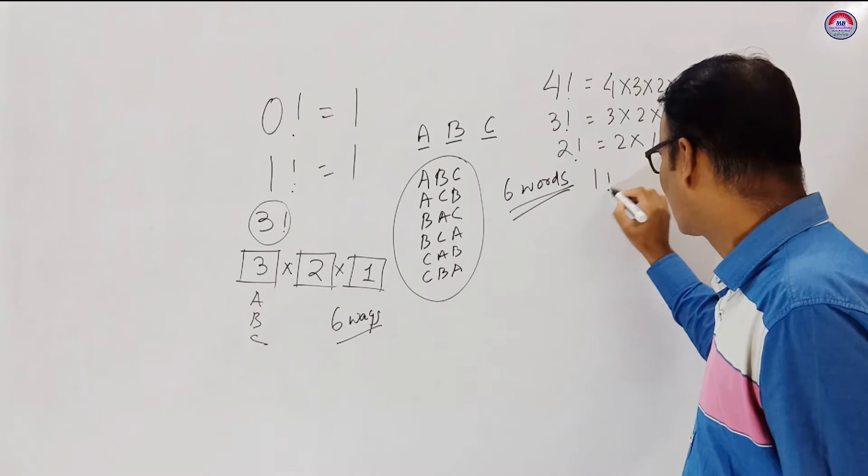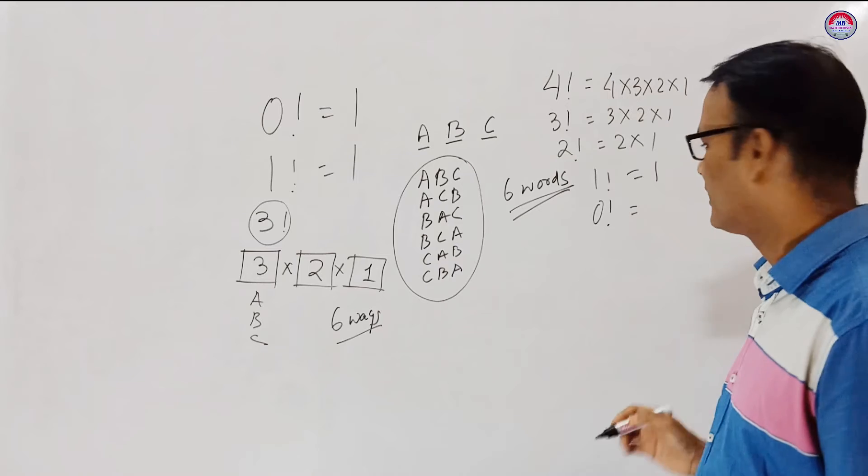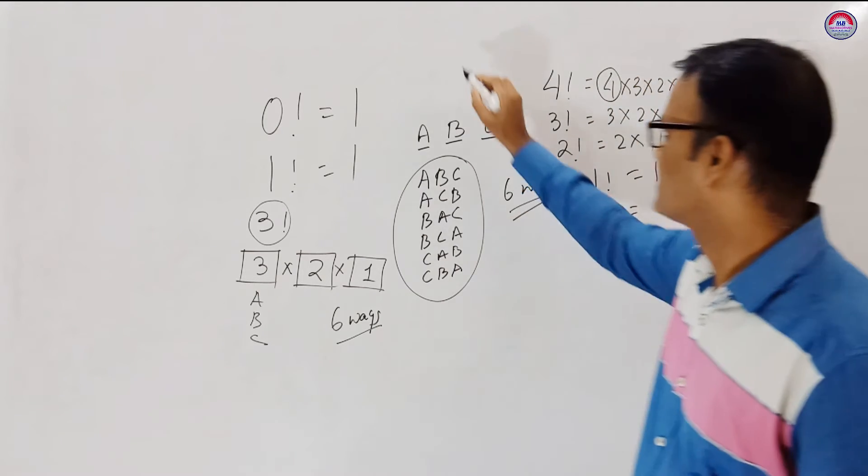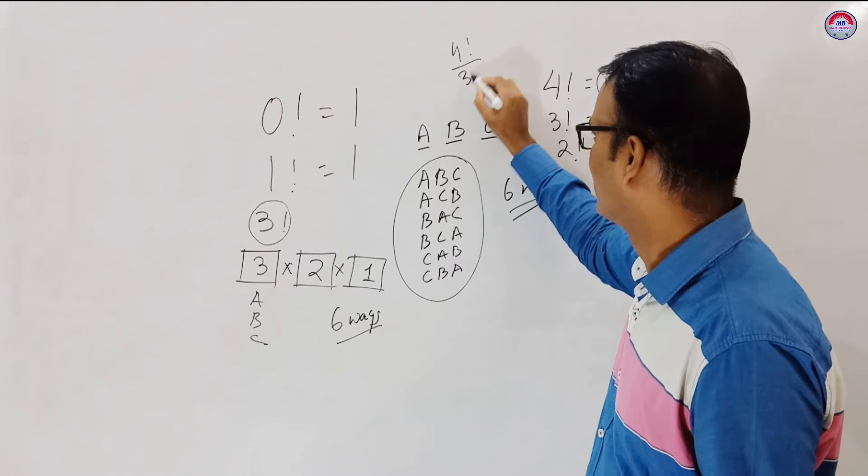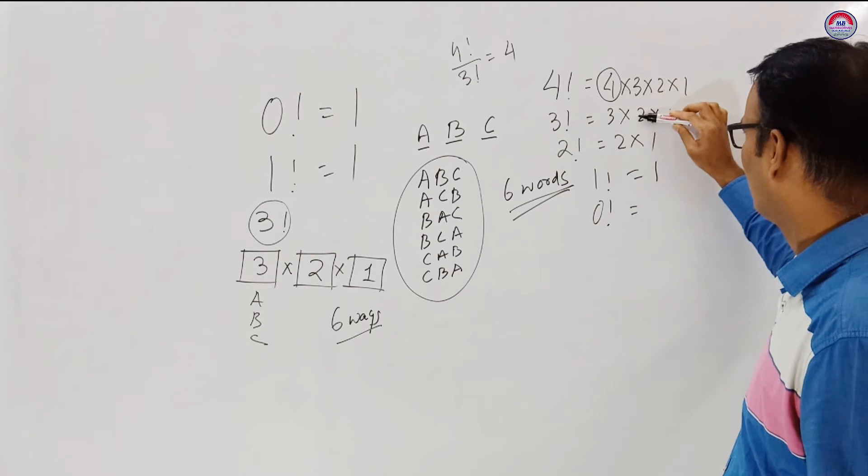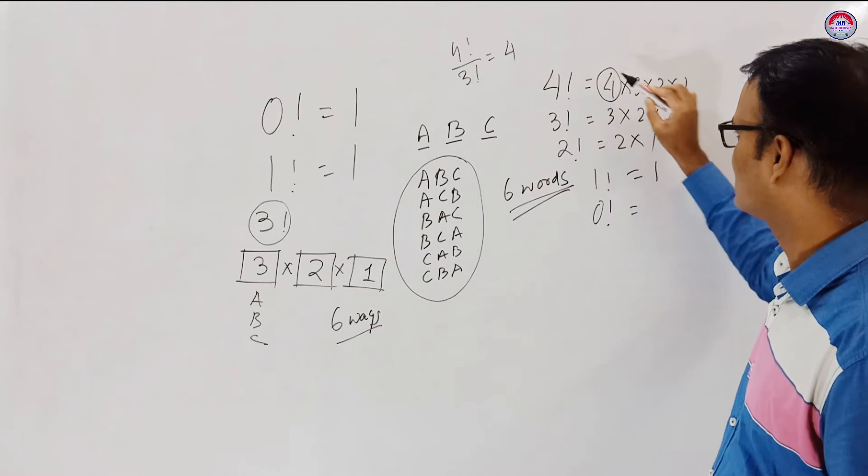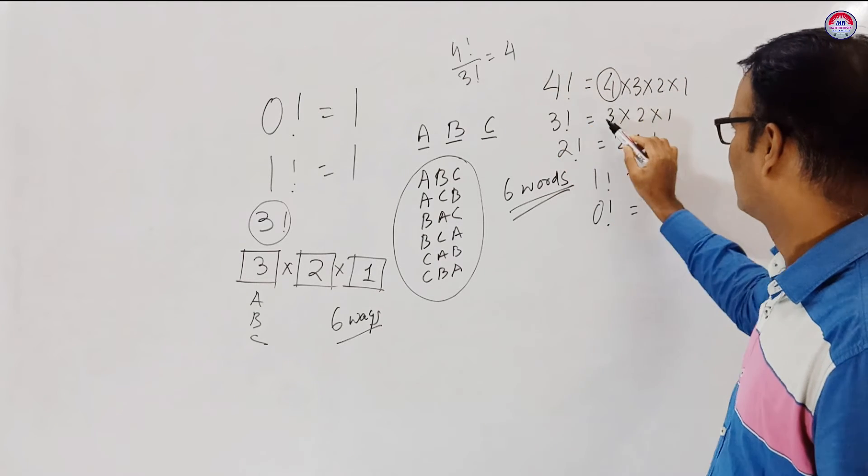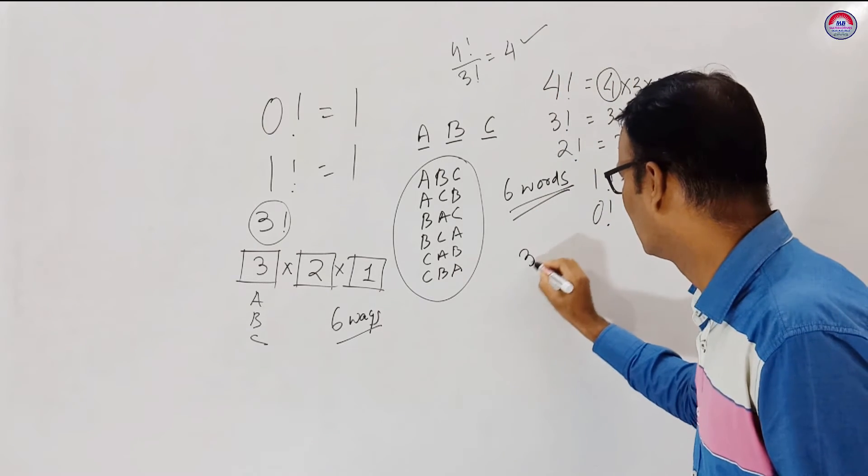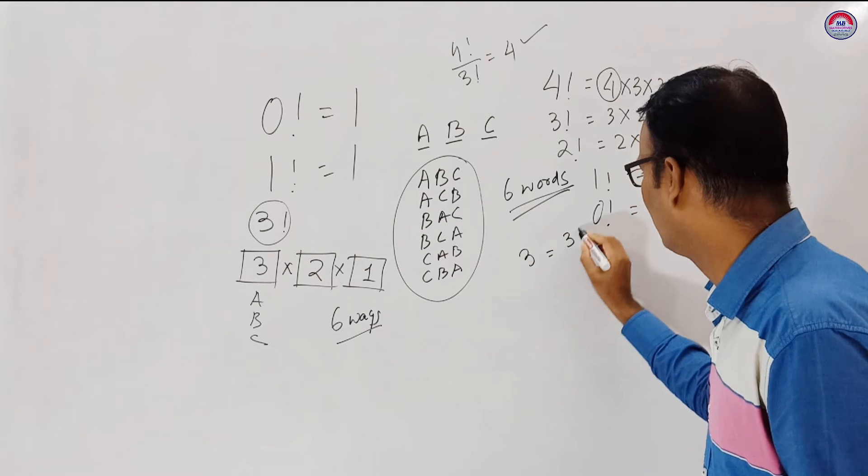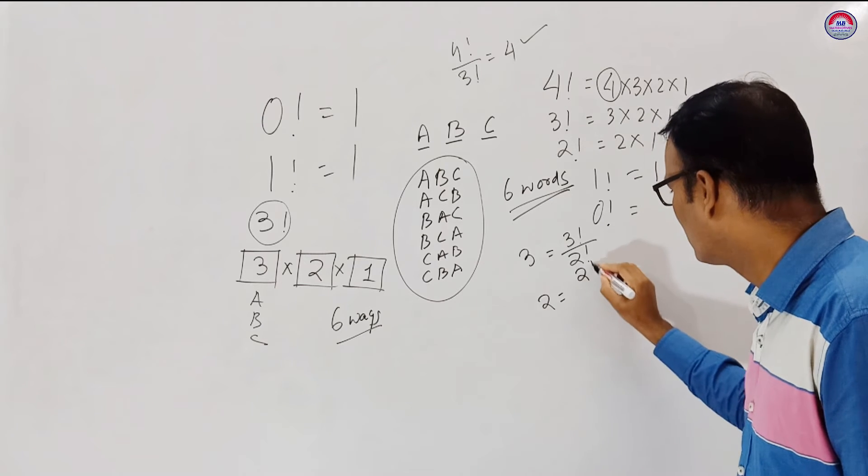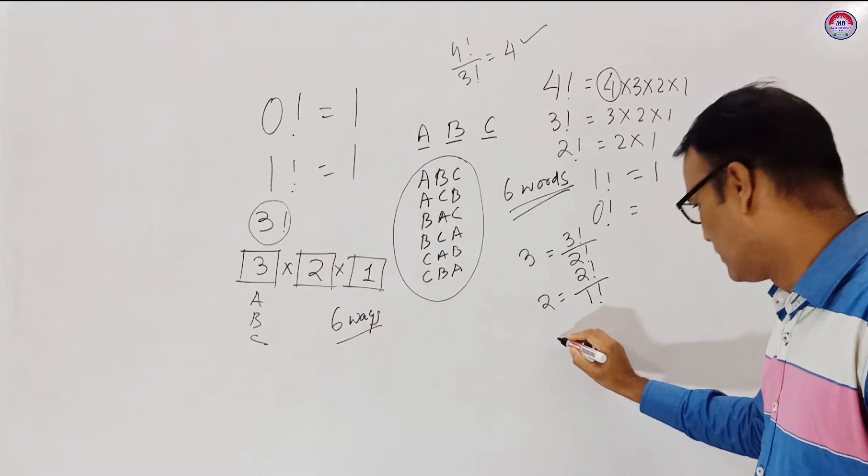Three factorial is equal to three into two into one. Two factorial is equal to two into one. One factorial equal to one. What is zero factorial? How you write? You see, to get the number four, you can write four factorial divided by three factorial, that is four into three into two into one divided by three into two into one, so you get four. In same process, if you find three, we can write three factorial. For two, you can write two factorial by one factorial. Then one, you can write one factorial.